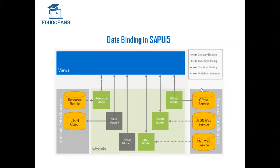One-time binding is the default behavior of the resource model. When you run the application, the text from the resource bundle file is bound to controls just one time. After that, the data cannot be changed in the model. This is not the case with the JSON model, XML model, or OData model, which support two-way binding.